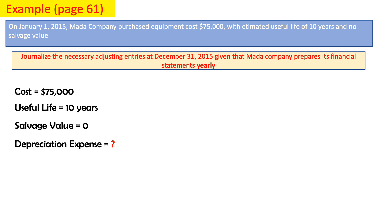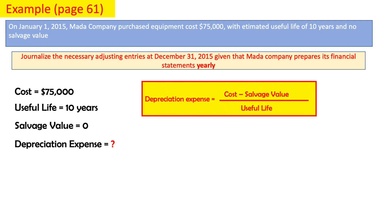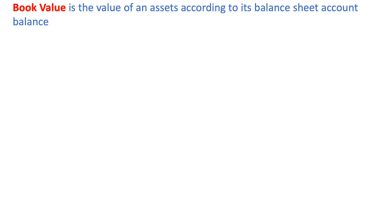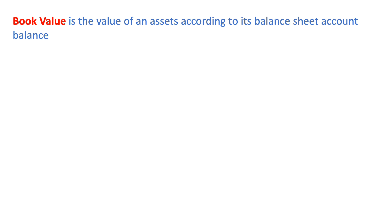To find the depreciation expense we apply our formula: Depreciation Expense = (Cost minus Salvage Value) divided by Useful Life. So: ($75,000 minus $0) divided by 10 = $7,500. Now I'll prepare my adjusting entry with the date, debit Depreciation Expense $7,500, and credit Accumulated Depreciation $7,500.